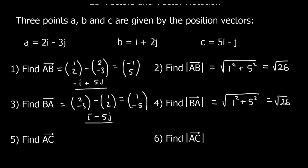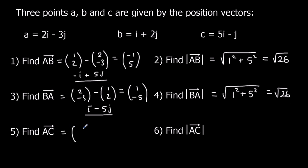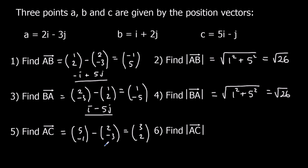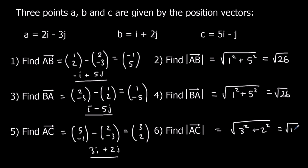For A to C, we do C take away A. C is (5,-1), A is (2,-3). So 5 take away 2 is 3 for the i's; -1 take away negative 3 is 2 for the j's. So A to C is 3i plus 2j. The magnitude — the distance going along 3 and up 2 — is the square root of 3 squared plus 2 squared, which is root 13.